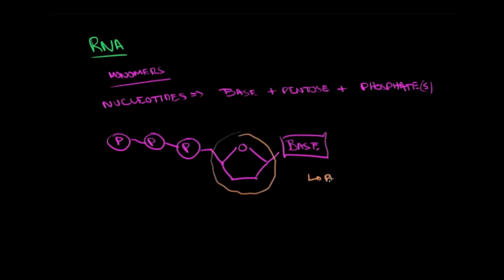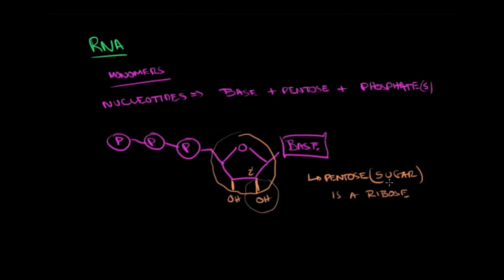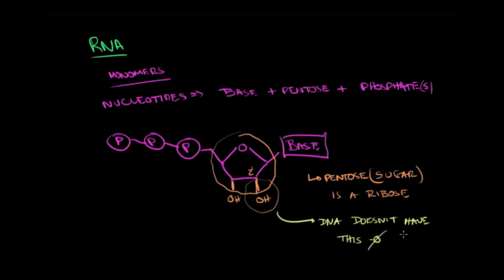The major difference between RNA and DNA is that the nucleotides — the monomers of RNA — are different from those found in DNA. The pentose sugar in RNA is a ribose, meaning you find two hydroxyl groups. In DNA, at carbon number two, you find a hydrogen instead of a hydroxyl (OH) group. So DNA has one less oxygen — this is the major difference in the monomer of RNA.